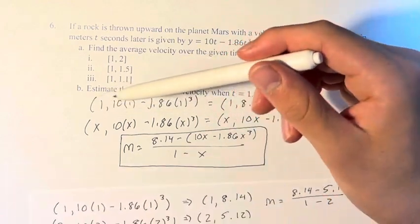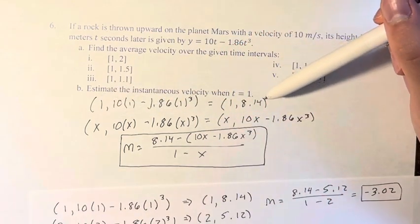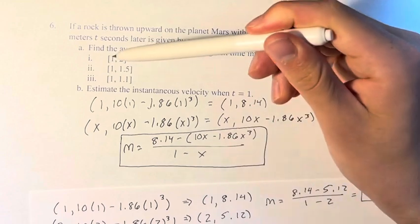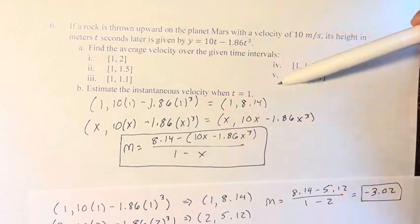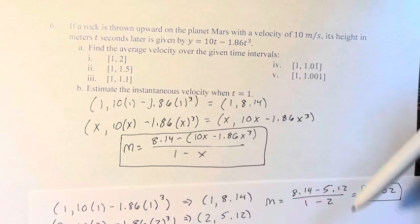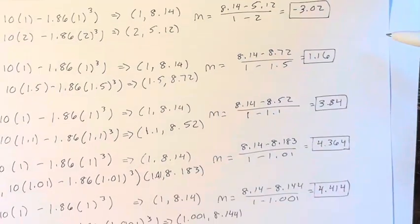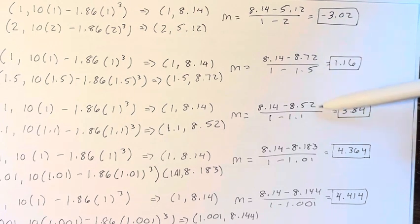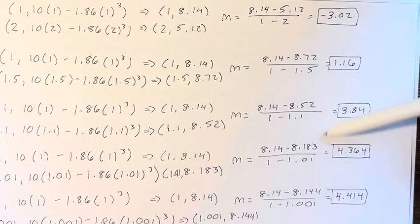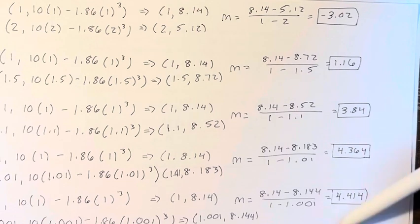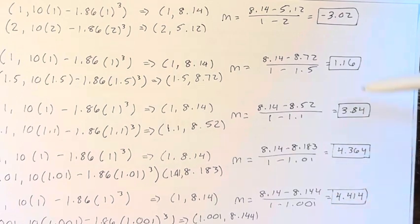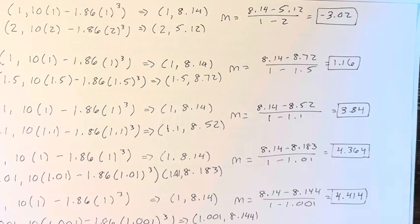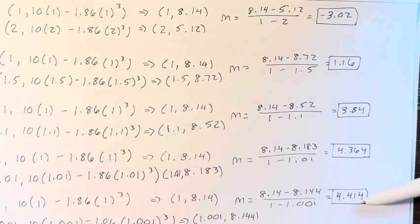We're asked to estimate the instantaneous velocity when t equals 1. That means bringing the second number all the way down to 1. What would we expect the velocity to be if we did that? Looking here at our values, we can see we start at negative 3 and then we have a big jump to 1, then a slightly less jump to 3.8, then a smaller jump to 4.36, then an even smaller one to 4.41. We can see that the jumps are getting smaller. We're approaching some value.